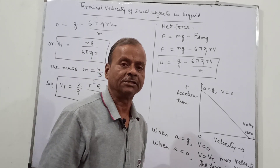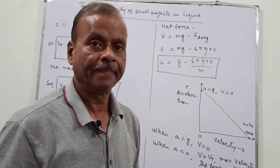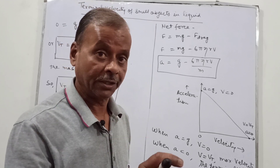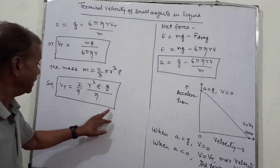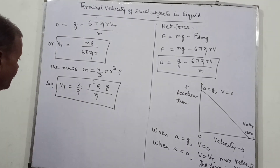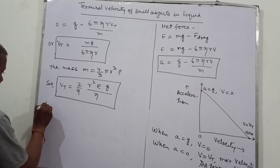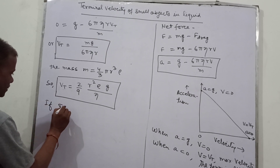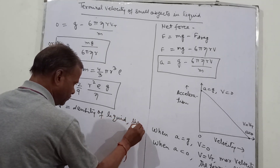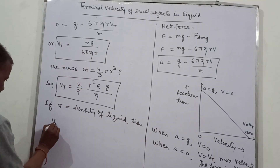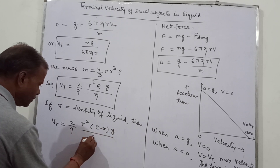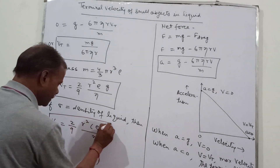However, we have not yet considered the density of the liquid. We assumed the body had very heavy density so the liquid density was small in comparison. If we include sigma as the density of the liquid, the corrected formula becomes vt equals 2/9 times r squared (rho minus sigma) g upon eta.